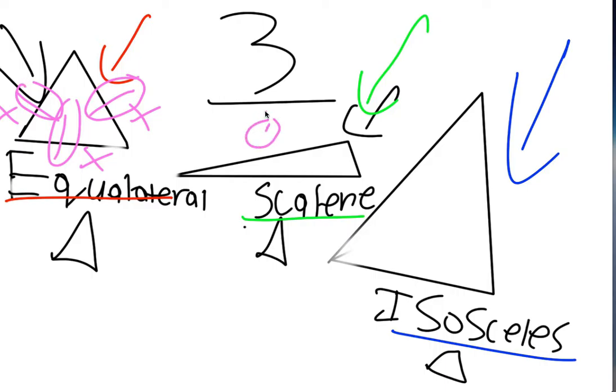A scalene triangle is a triangle in which none of the sides are congruent, which means none of the sides are equal in length. You'll notice that we put a different number of lines dashed through each one of the sides.